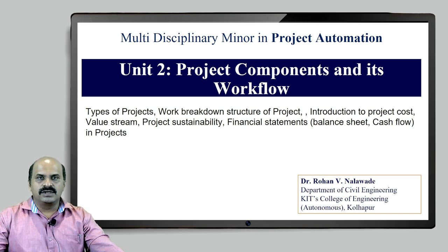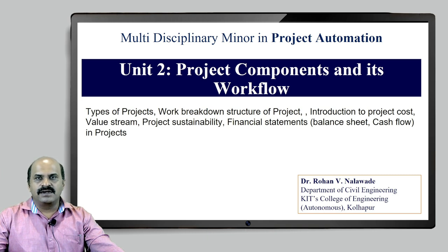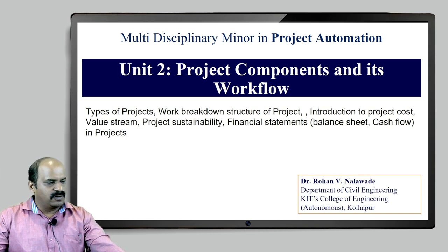Value stream is very important. As you can see, the types of projects, work breakdown structure, calculation of project cost — everything will be a part of deciding the automation strategy for a particular project. That is why this unit is dedicated to understanding the components of a project, how you will be deciding the cost aspect, deciding the value stream, and based on that you will be deciding the automation strategy, which will be a part of Unit 3. We will move ahead with this particular content for Unit 2.